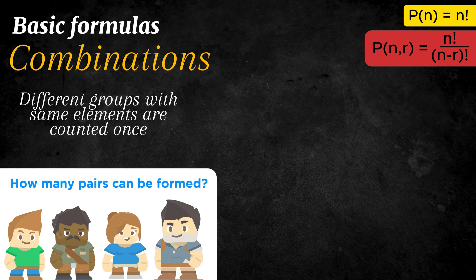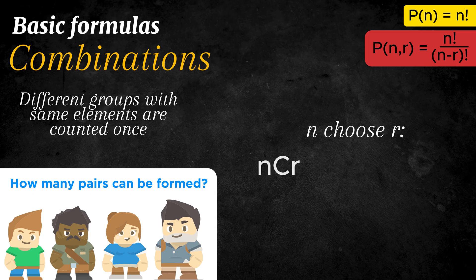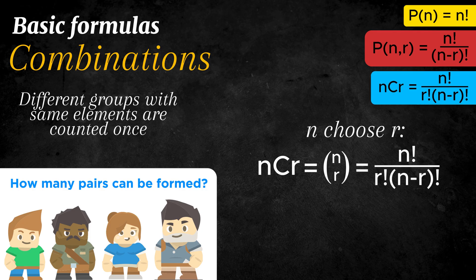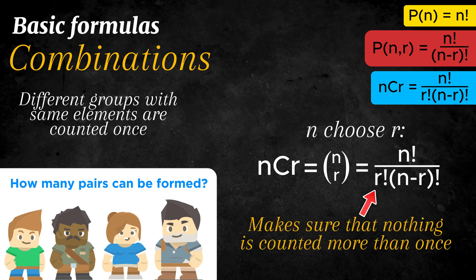How many possible pairs can be formed here? The formula for combinations is n choose r, written as ncr, or just n and r below each other between brackets, which equals n factorial divided by r factorial times n minus r factorial. The r factorial in the denominator makes sure that nothing is counted more than once.